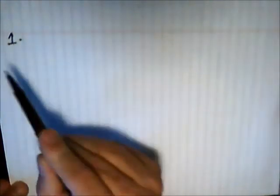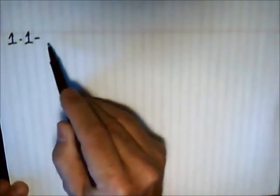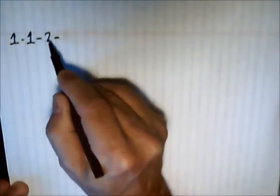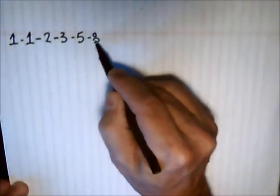He came up with a series of numbers, and the series is generated this way. You always start with one. The next number of the series is the number you're on plus the previous number. Well, there is no previous number, so one plus nothing is one again. Then one plus one is two, two plus one is three, three plus two is five, and so on and so forth.